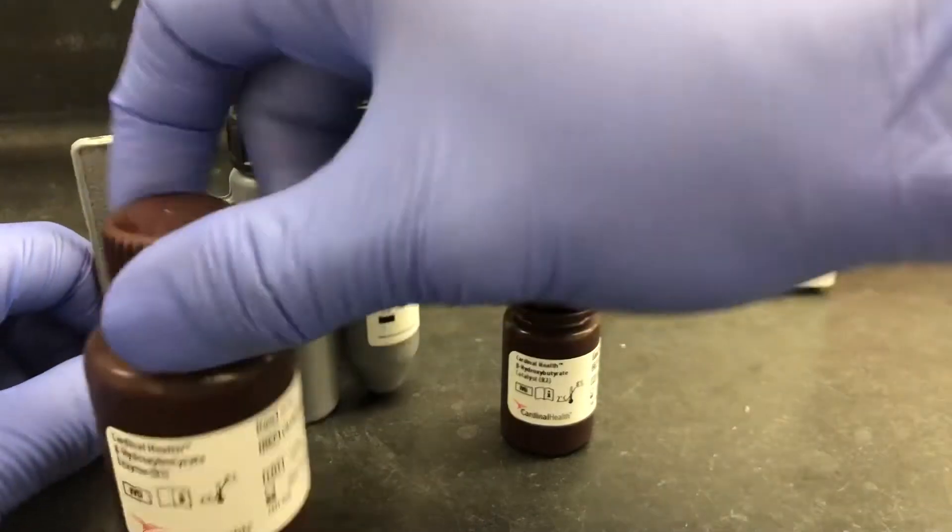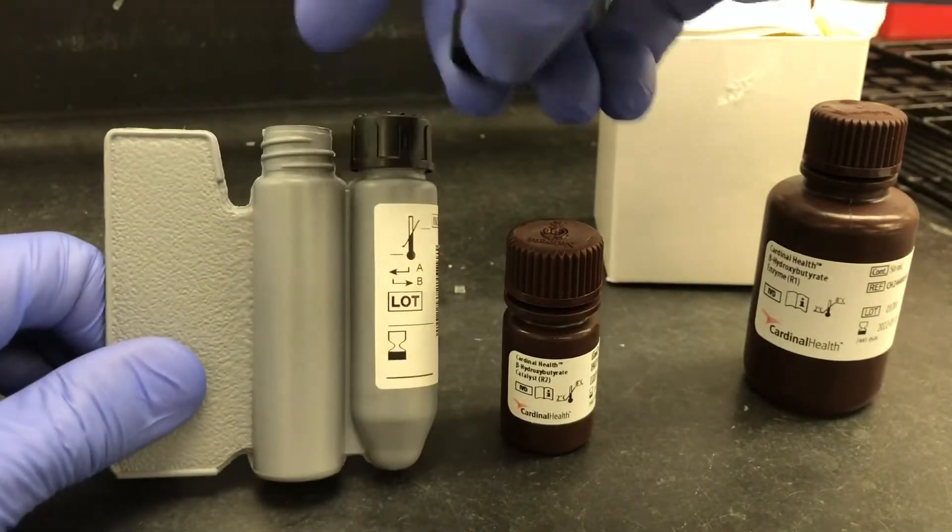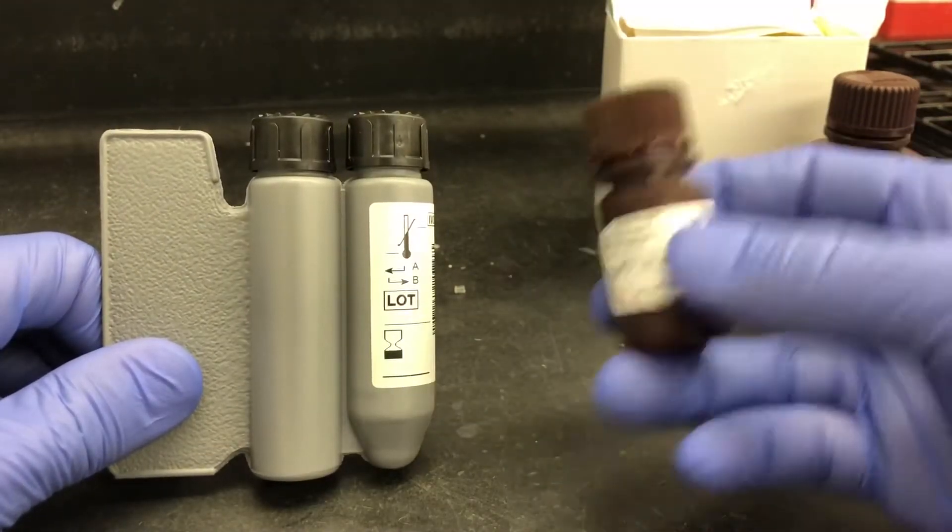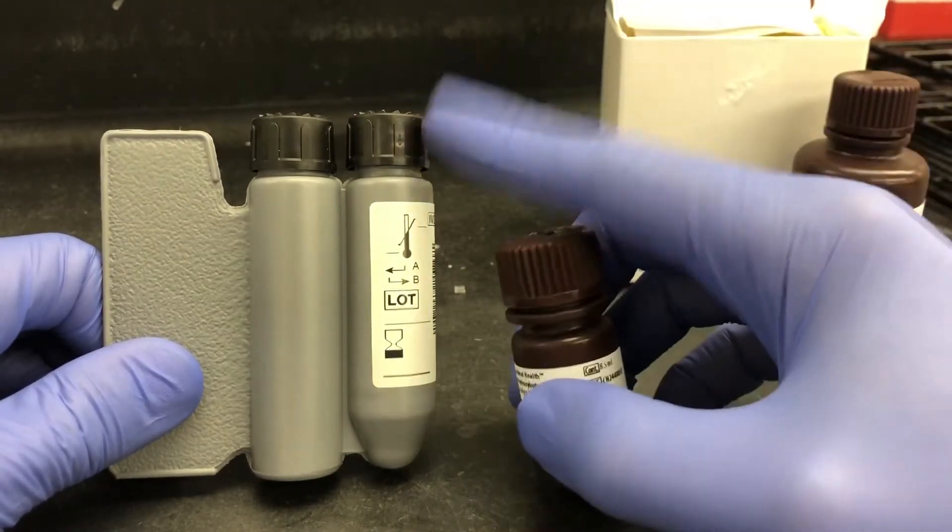So when you go to fill these, you're going to remove the cap on the user-defined reagent pack, and you would fill it about a quarter of an inch from the top. You would do the same for reagent 2 on the R2 side.